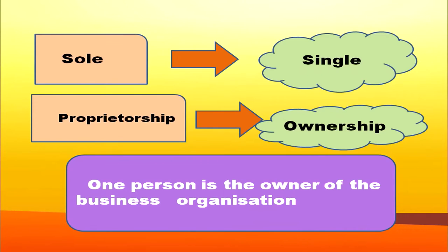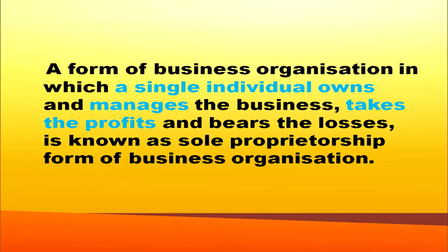Now, coming to the meaning of sole proprietorship. It is a form of business organization where one person is the owner. Sole means single and proprietorship means ownership, so single ownership. Sole proprietorship is a form of business organization in which a single individual owns and manages the business, takes the profit and bears the losses. So it is managed by one person, owned by one person, and profit is fully shared by him — that is sole proprietorship.